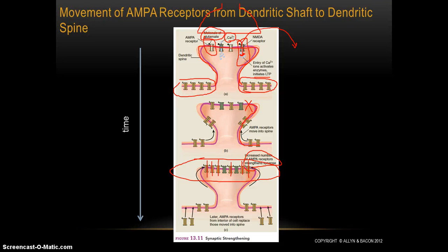We're back, and this will probably be the last video describing this process of long-term potentiation. We are almost finished, almost through the whole story in terms of talking about how synapses strengthen. We've seen really all the pieces to the puzzle here, involving two receptors: NMDA and AMPA.